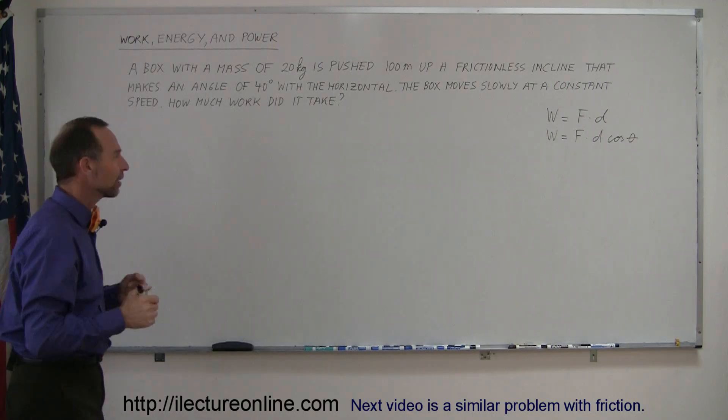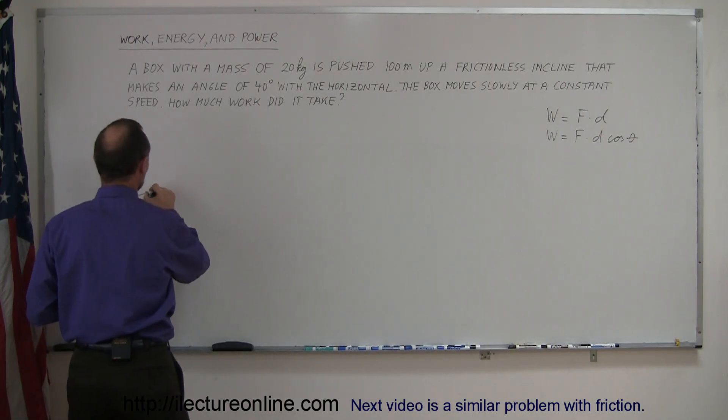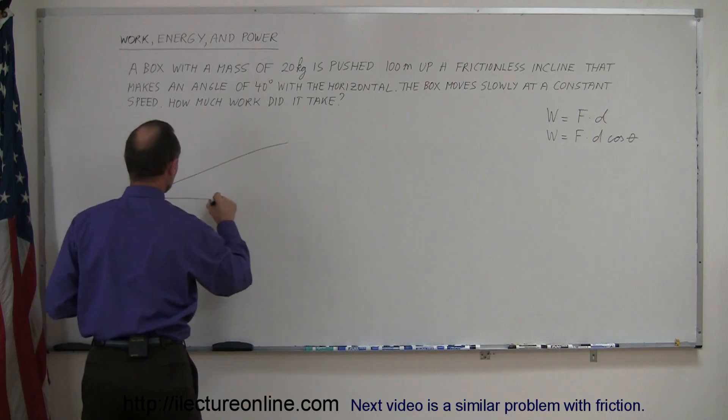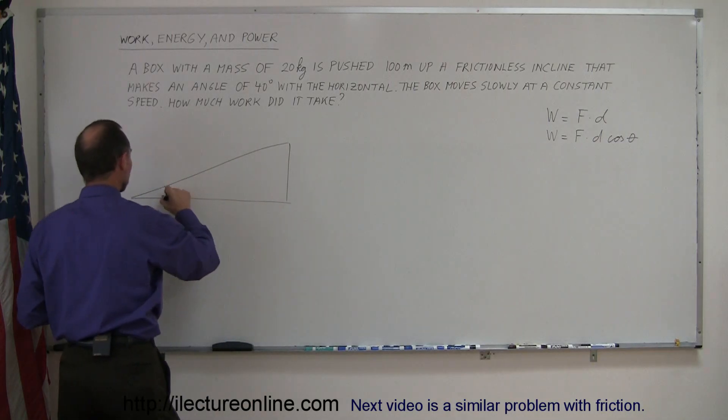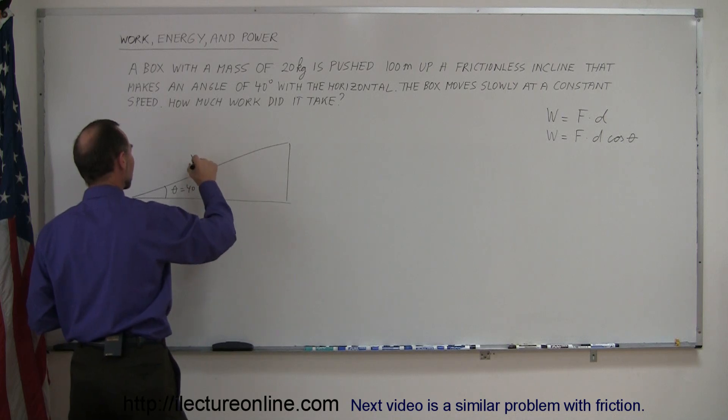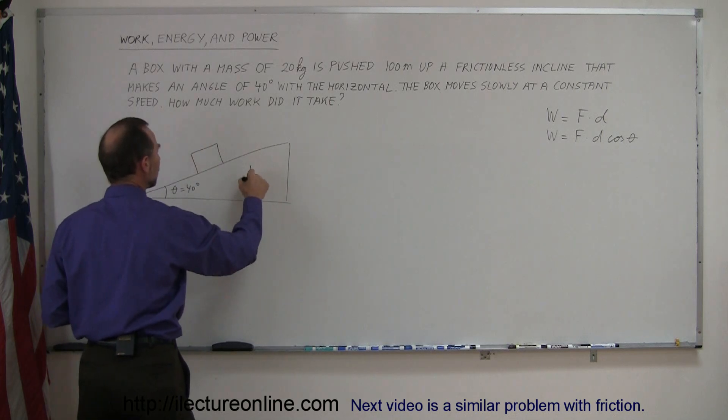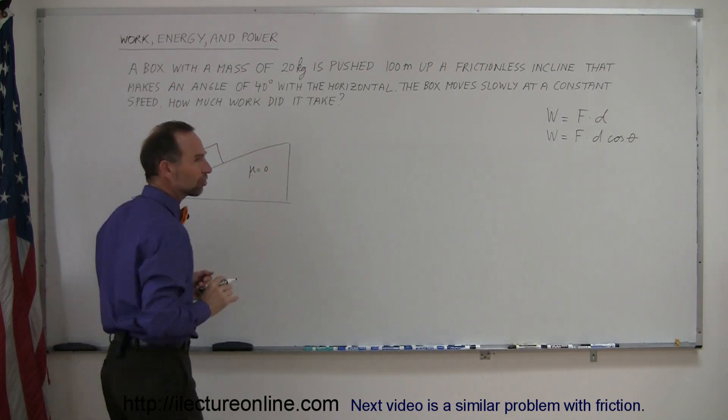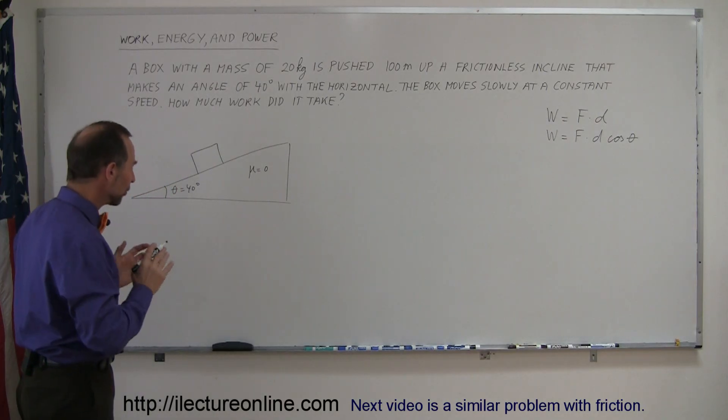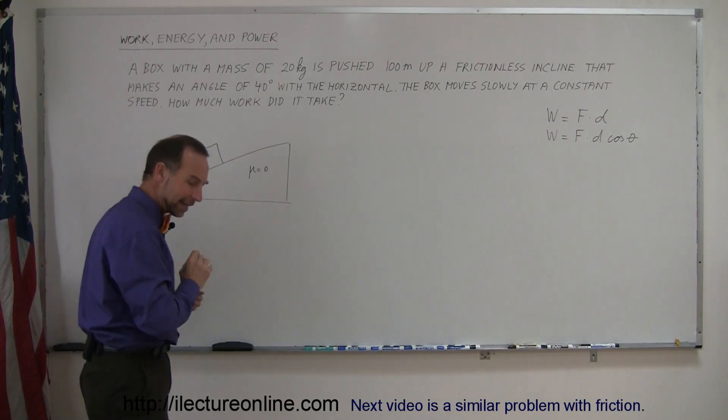Let's make a drawing so you can see how that looks. Here's the incline. The angle that the incline makes is 40 degrees. Here's a box on the incline. μ equals zero, meaning there's no friction here.